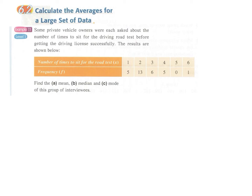We come to the next section 6.2: calculate the averages for a large set of data. Usually we have some sort of table like this showing the number of times to sit for the road test and these are the frequencies. Now we have to find the mean, median, and mode of this group of interviewees.